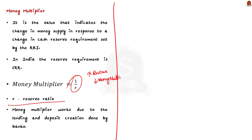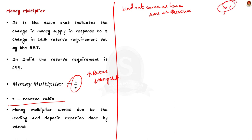The basic idea behind the money multiplier is that banks can lend out a portion of the money they receive as deposits while keeping some portion as cash reserve. This creates a chain reaction of lending and deposit creation that can potentially increase the money supply by several times. For example, if CRR in India is 10%, banks must keep 10% of total deposits as cash reserves and can lend out the remaining 90%. The maximum possible money multiplier would then be 1 divided by 10%, which equals 10.